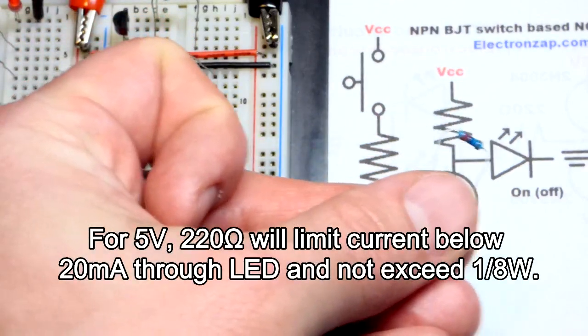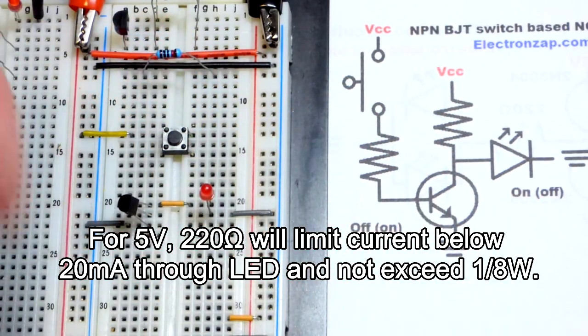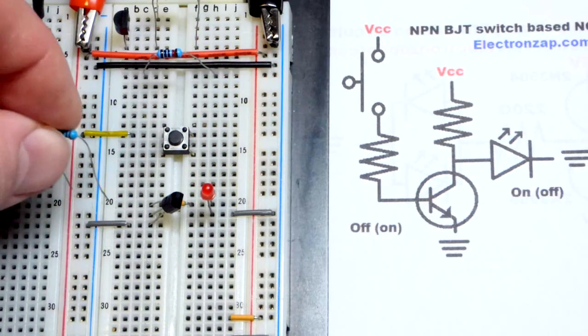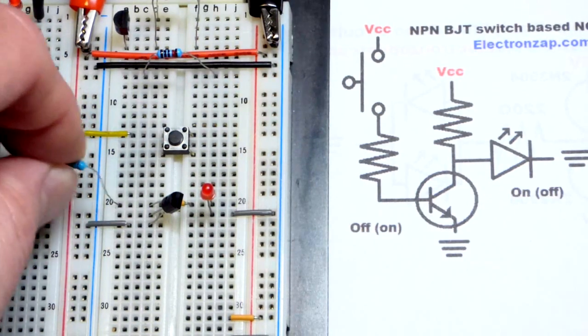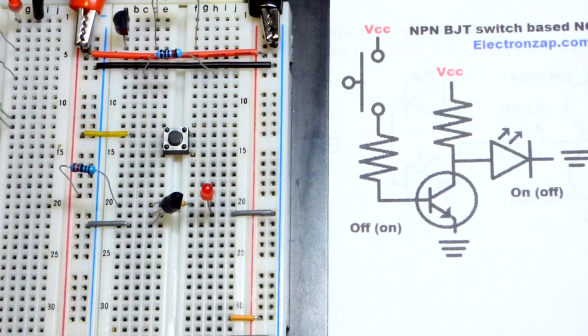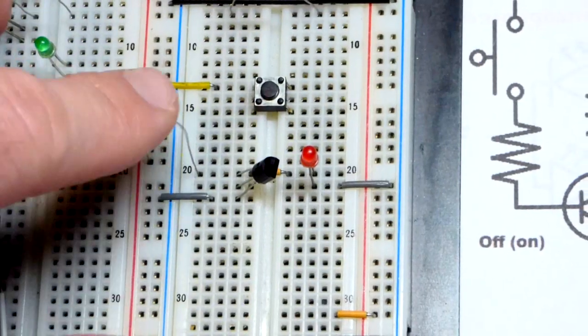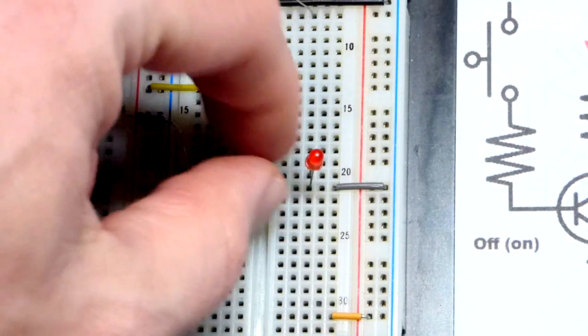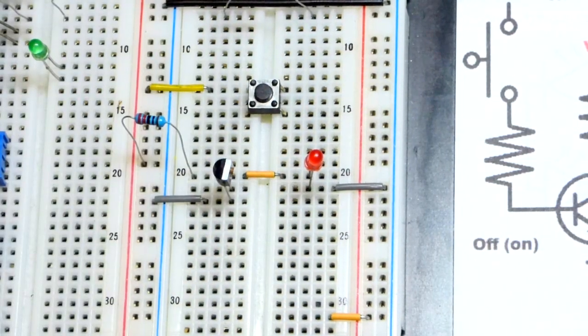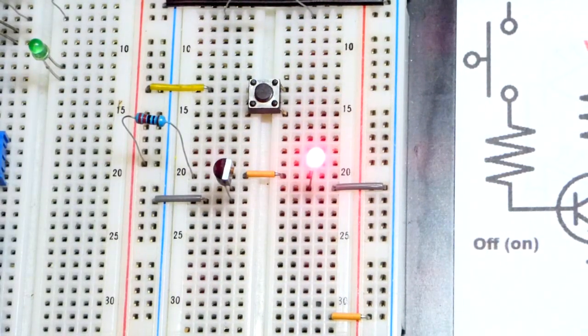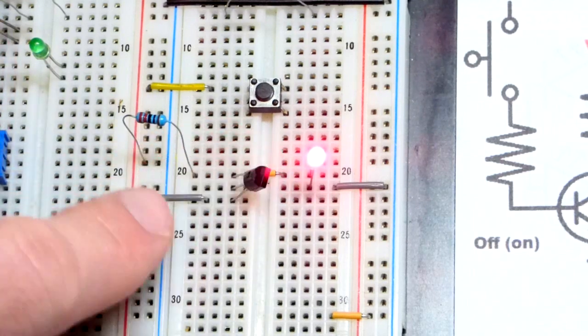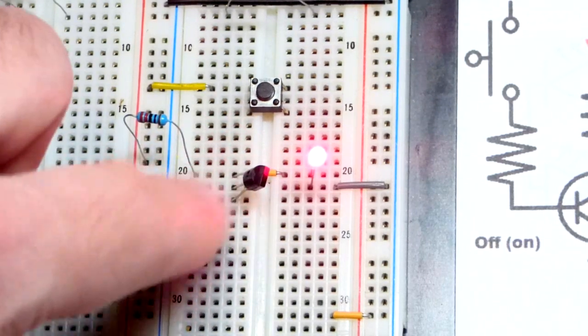So now we're going to take this resistor here and we're going to put it to the positive supply right there, and then to the collector of the transistor. So we'll get a little better view right there. And so right now I'm going to turn the power on, and there you can see the LED is on. But nothing's going to the base, so the transistor is off.